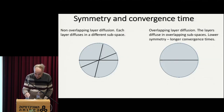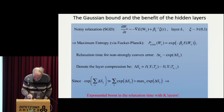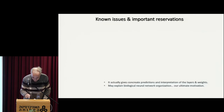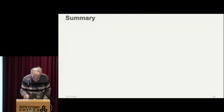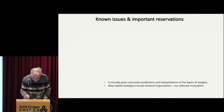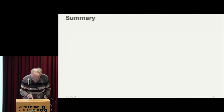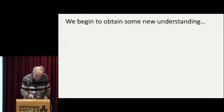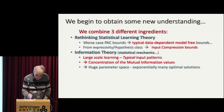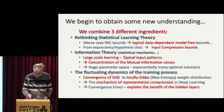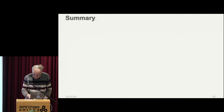I think I'm out of time, so I'm just more or less going to summarize. Usually I have to say something about the reservations and criticism, but you can read them yourself — there are a lot of them. Most of the criticism of this work is due to misconceptions about the way we use information, because we discretize things and whether it's really information or not.